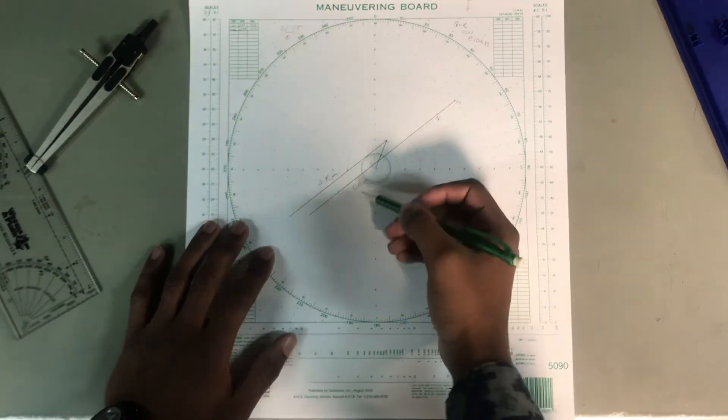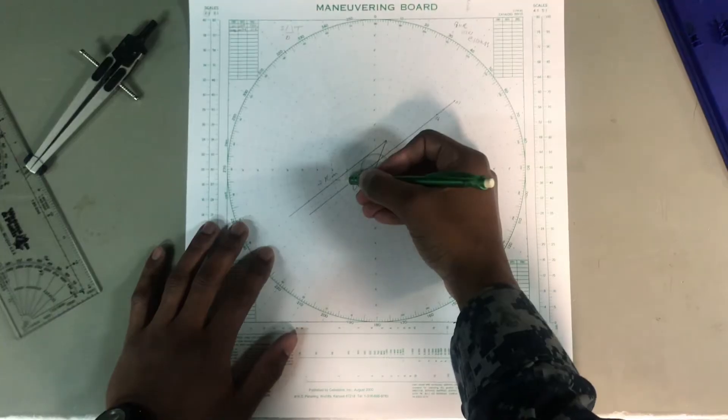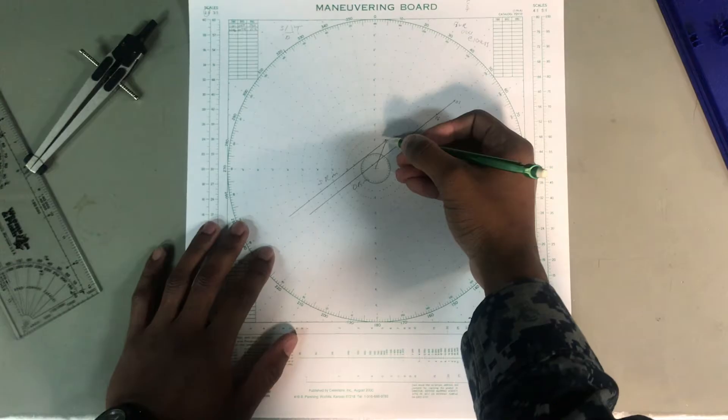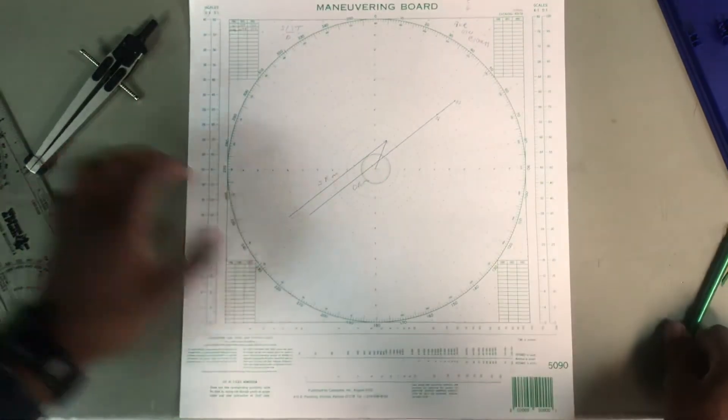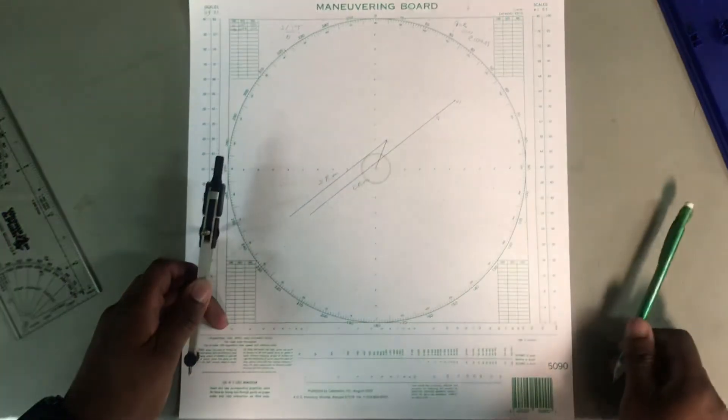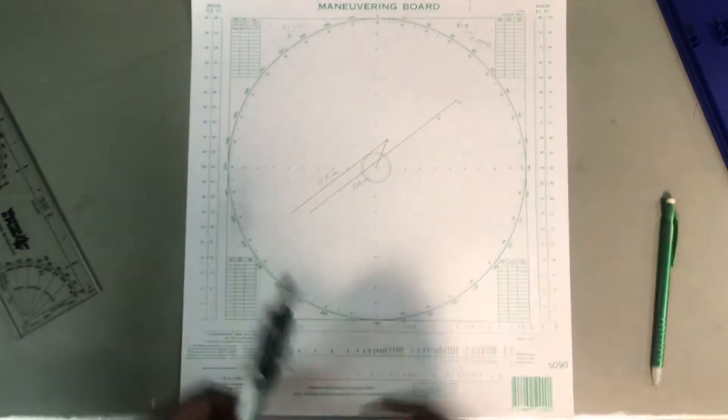And this contact seems to be about 800 yards. So it is really, really close. We're going to need to avoid this guy. Why is the CPA on this particular line? That's because this line is your DRM, Direction Relative Motion. This line is going to represent the line for the contact. It's where their hits are at and this is where we expect them to be at at a certain time.